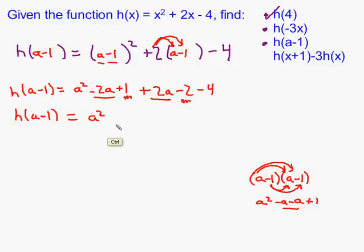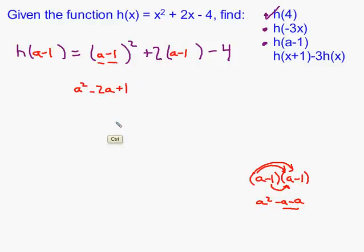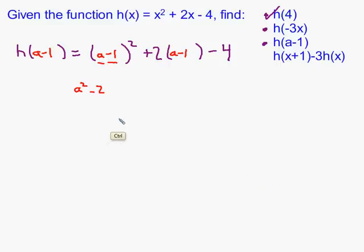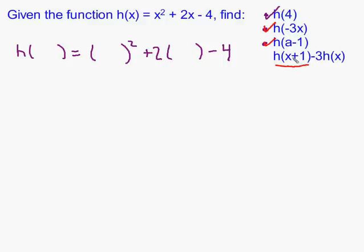The last problem is the most convoluted one — still not that bad, but it leaves a lot of places to make mistakes. The logic is no different than before. The last problem is really two problems in one, making use of the function h of x twice. If you just solved one piece — replacing the input variable with x plus 1 — that would give you h of x plus 1. So let's do that first.